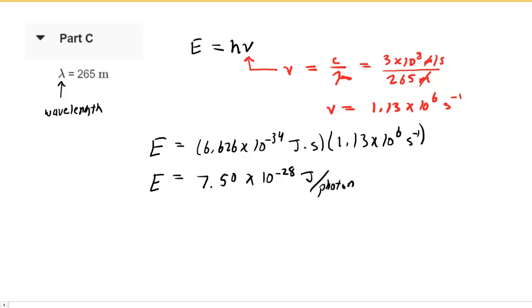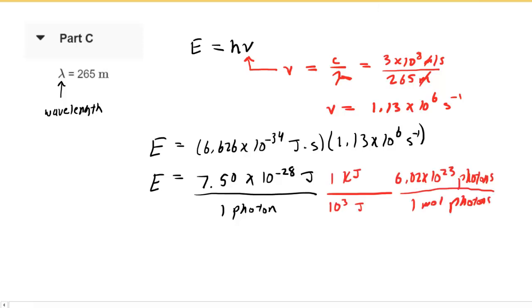At this stage, let's go ahead and set up the conversion right here. We'll put this over 1 photon, and then we'll set up the same conversion factors. The joules are going to cancel, photons are going to cancel. This leaves us with kilojoules per mole of photons. Our final answer for part C is 4.52 times 10 to the minus 7 kilojoules per mole of photons.